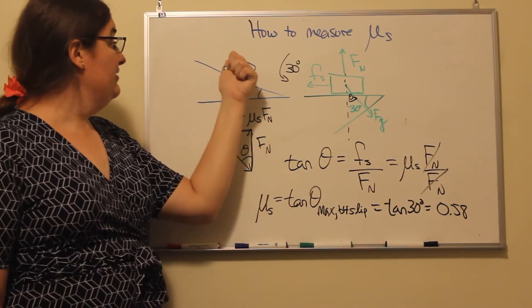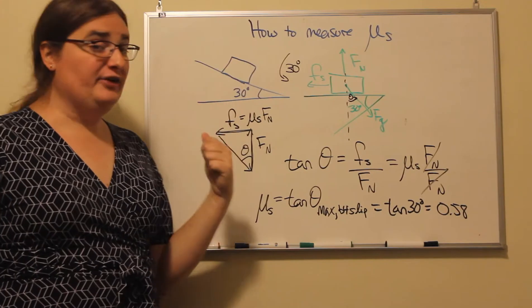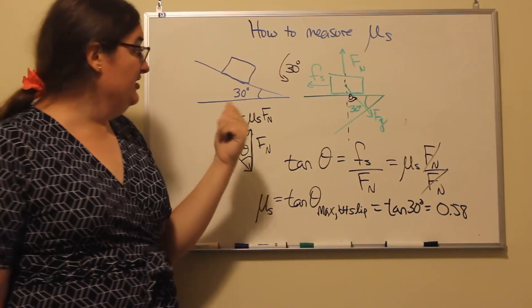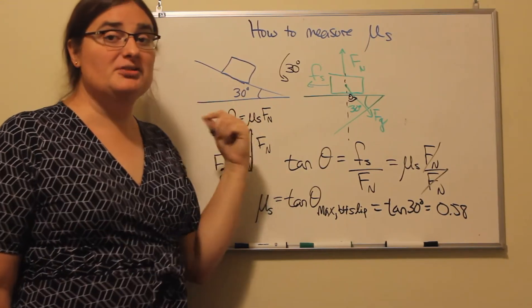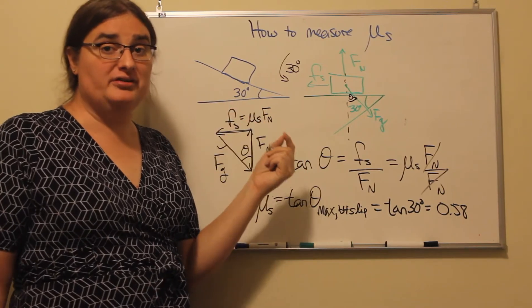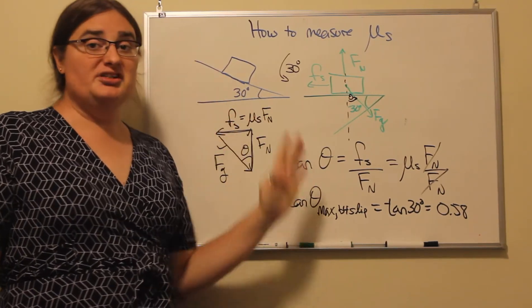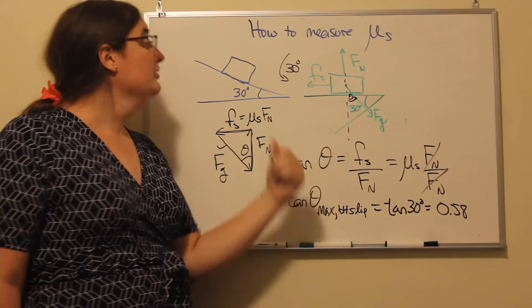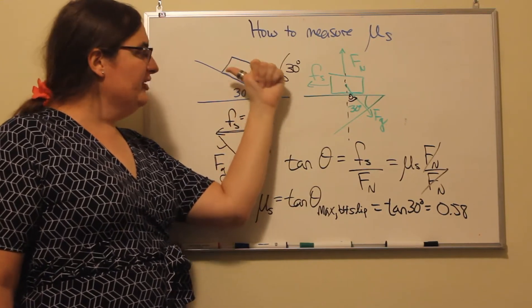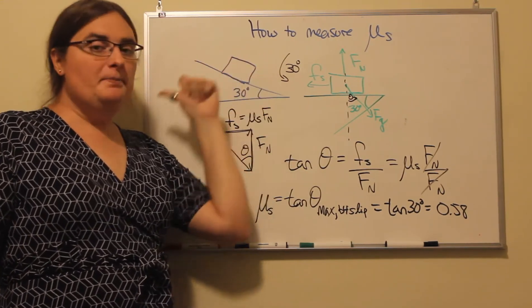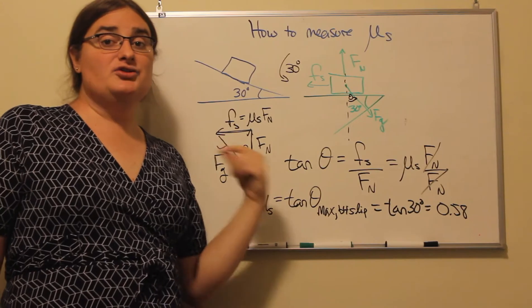And the static friction. The static friction here would by definition be the maximum static friction—any steeper, we'd need more static friction and it wouldn't work. That static friction is being directed parallel to that surface, so it would be up and to the left.